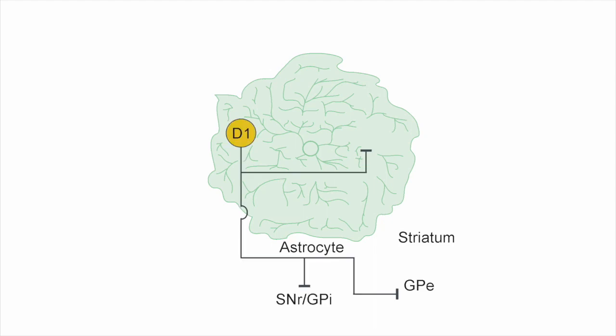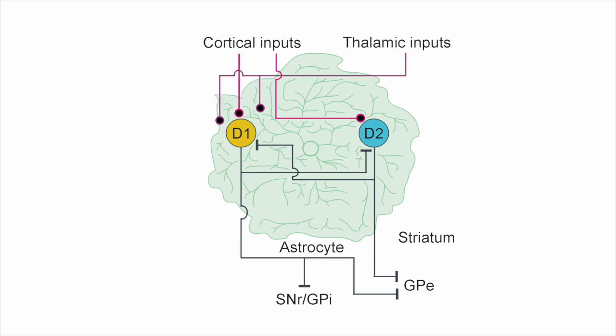Overall, striatal astrocytes appear to equivalently sample the striatal inputs that we assessed by co-localization. However, when we looked at the FRET signals from these inputs, we found strong differences in their level of contact. For example, we found the most proximate associations with MSN collateral projections, but the most distal associations with the nigrostriatal projections.